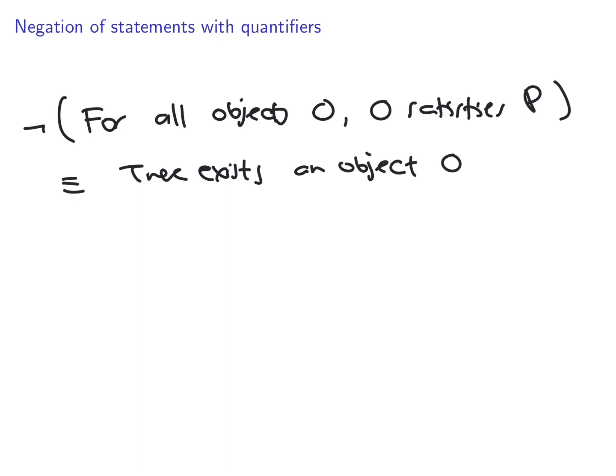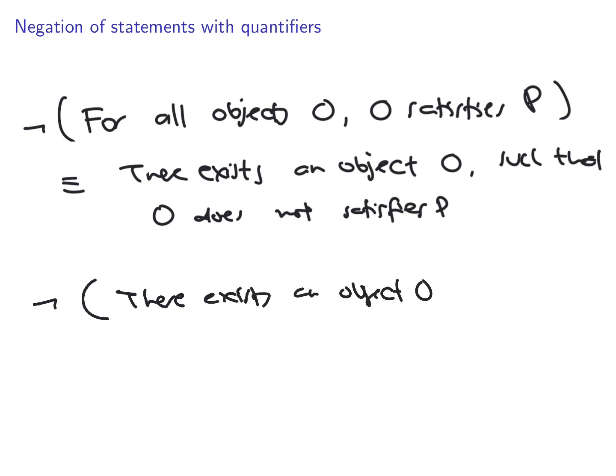So, when you negate statement like this, for all objects O, O satisfies property P, the negation of this is there exists an object O such that O does not satisfy P.